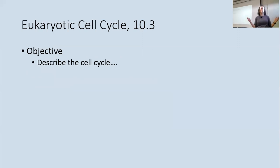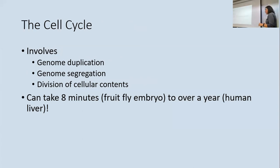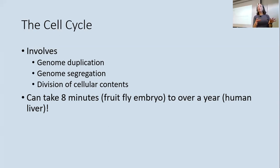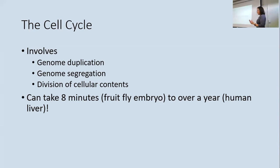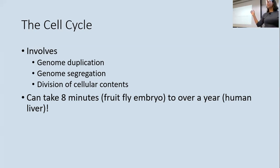The cell cycle involves duplicating the genome, segregating the two new genomes, and then dividing all cell contents between the two new cells — similar to binary fission but with potentially dozens of chromosomes and organelles to keep organized. The time it takes varies widely depending on the cell; some fruit fly cells can divide in under 10 minutes while some human cells take more than a year.